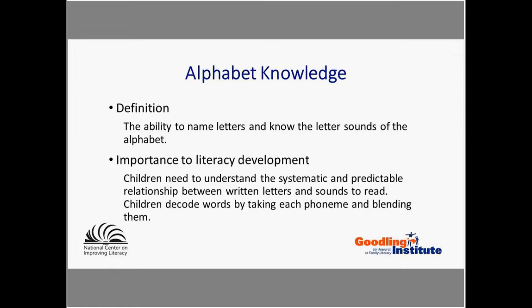Alphabet knowledge is the ability to name letters and know the letter sounds of the alphabet. It is the matching of phonemes — the smallest units of sound — and their respective graphemes, the written symbols in language. Once children have learned the connection between sounds and print letters, they begin to realize that these segments make up words and letters. Children begin to see a systematic and predictable relationship between written letters and sounds, which helps them learn how to read. Without understanding this relationship, children will have difficulty decoding words, and if the decoding process is slow or laborious, this becomes a significant issue.